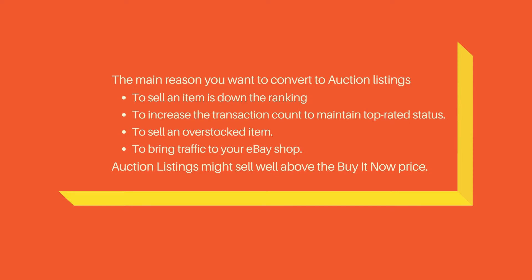The second use case: if you are a top rated seller and feel you are close to losing that status and want to increase your transaction count, select an item you have plenty in stock costing less than five dollars or five pounds. Put it on auction starting at 99 cents or 99p with, say, three pounds postage — so even if it sells at 99p you're getting at least £3.99 guaranteed. Depending on the category, you might end up selling for much more than the buy it now price, as auction listings tend to do that.